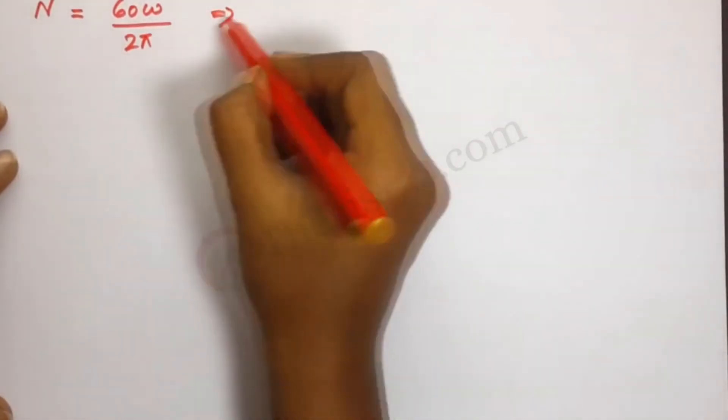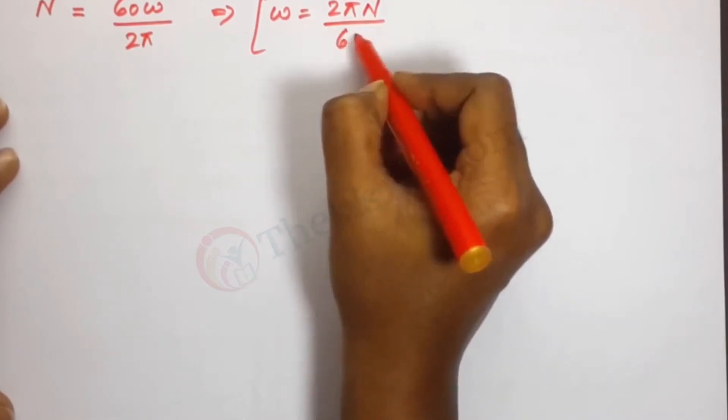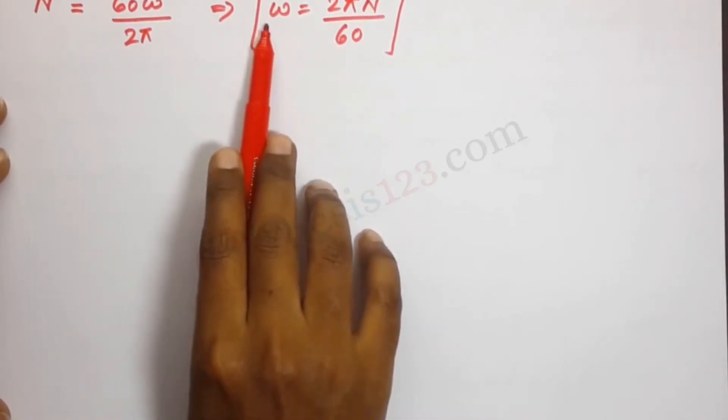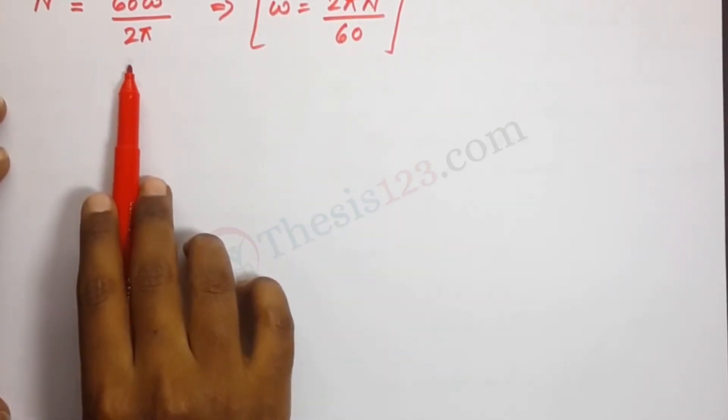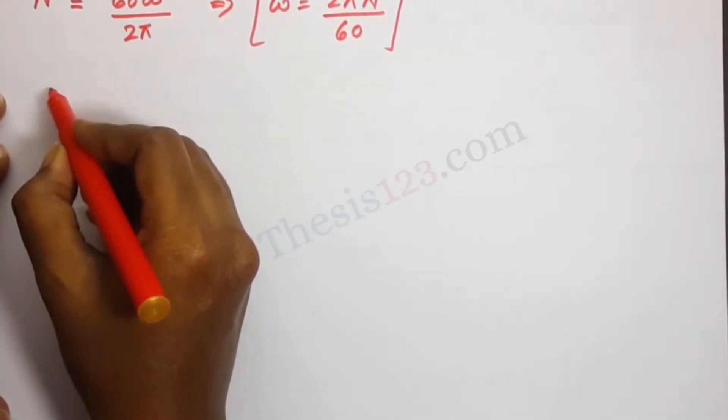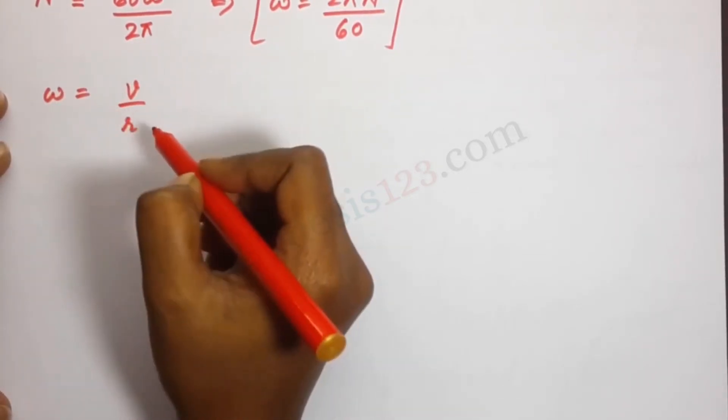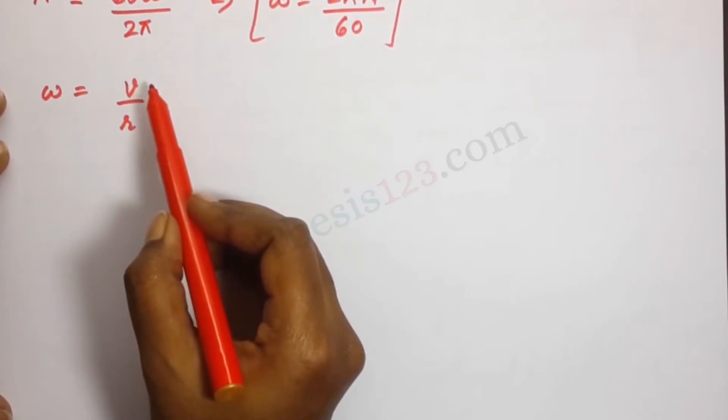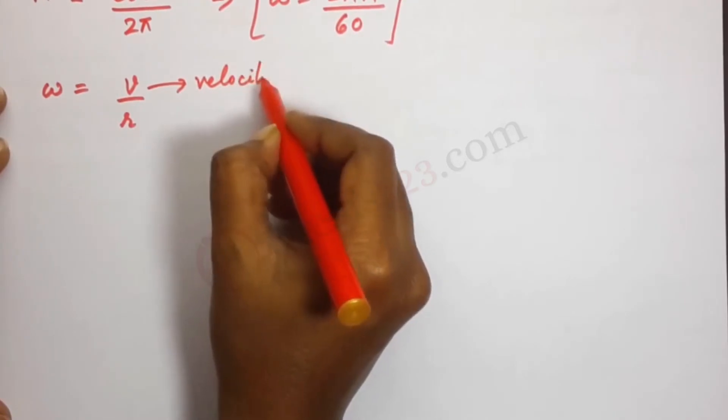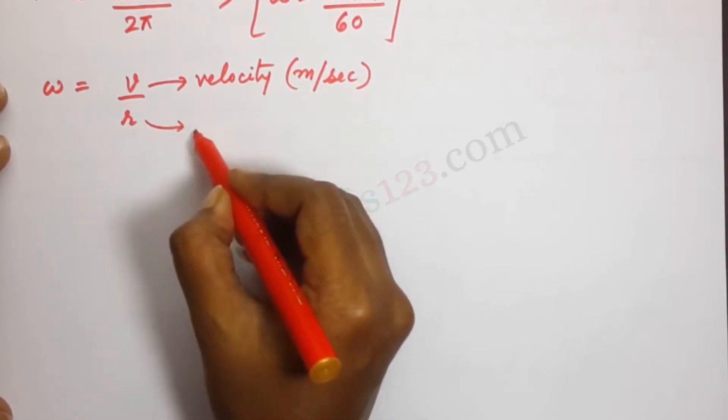How do we get this? We get this from the formula omega equals 2 pi N by 60. So the expression for N would be 60 omega by 2 pi. But we need what omega is. Omega equals V by R, where V is the velocity in meter per second and R is the radius of the path.